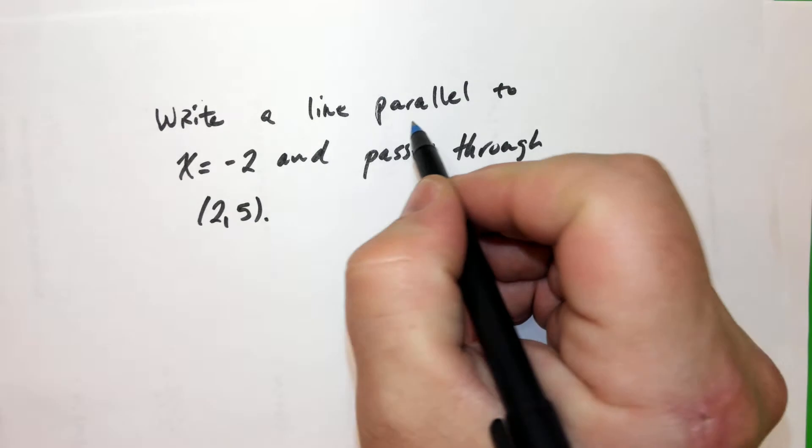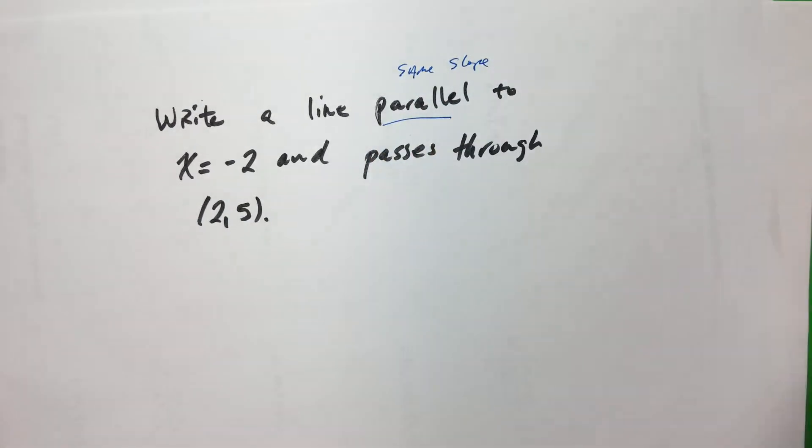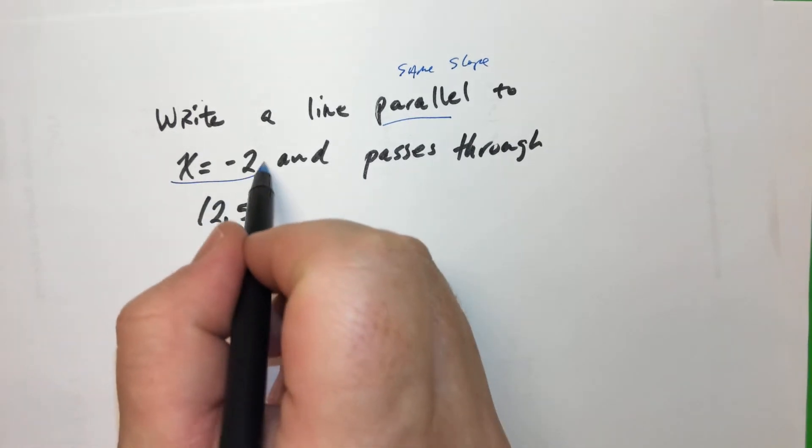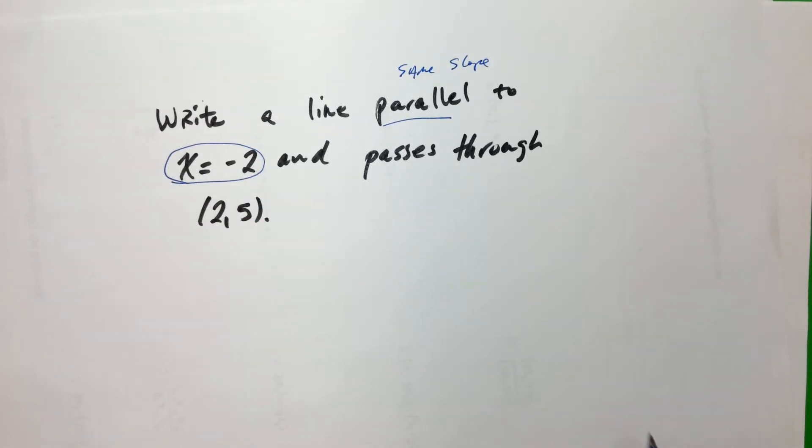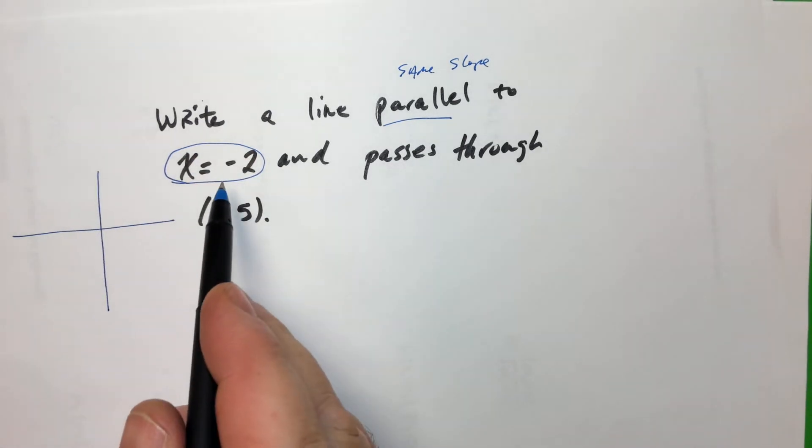So parallel means we have the same slope, right? The tricky thing is what's the slope of that? So what I'm going to do is I'm going to draw a picture of that graph.